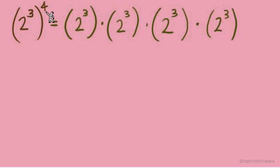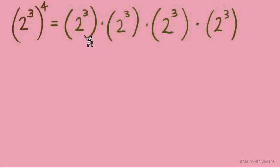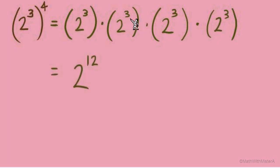We could expand this further into 2 times 2 times 2, and so on, but let's not do that. We've done a lot of work on this situation — when we have the same base and it's all multiplied together, we know we can just add those exponents up. 3 plus 3 is 6, plus 3 more is 9, and then 3 more makes 12.